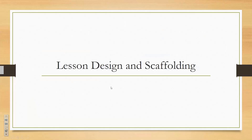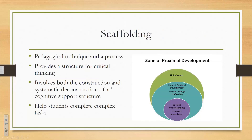Next I'll transition to how you can design lessons using the scaffolding technique to promote critical thinking. Scaffolding is based on the idea of the zone of proximal development. As you can see from this graphic, we have the current understanding — the level at which a student can work without your help. The zone of proximal development is the area in which a student can learn through your help — the help of a more knowledgeable other. Critical thinking more often than not lies in this zone or even beyond it for many students.